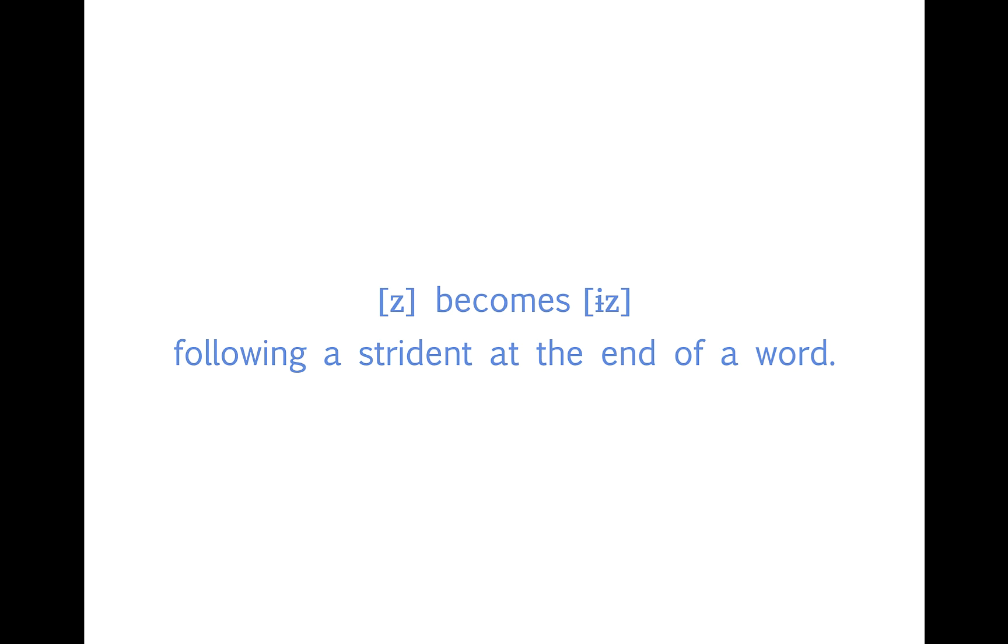We can describe this process in words by saying that the English plural suffix [z] gets an extra vowel following a strident consonant. How can we represent that with a rule?